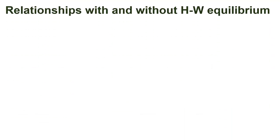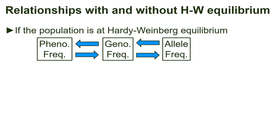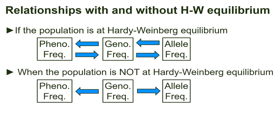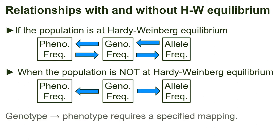To recap in a slightly different way: if the population is at Hardy-Weinberg equilibrium, we can easily move back and forth between the three sets of frequencies. When the population is not at HWE, we need to have the genotype frequencies to figure out the others. This is why so many class examples assume HWE — instructors can ask more types of questions. In the real world, whether the population is at HWE has to be determined by comparing at least two of these sets of frequencies to each other. Note also that going from genotype frequencies to phenotype frequencies requires a specified mapping of which phenotypes correspond to which genotypes.